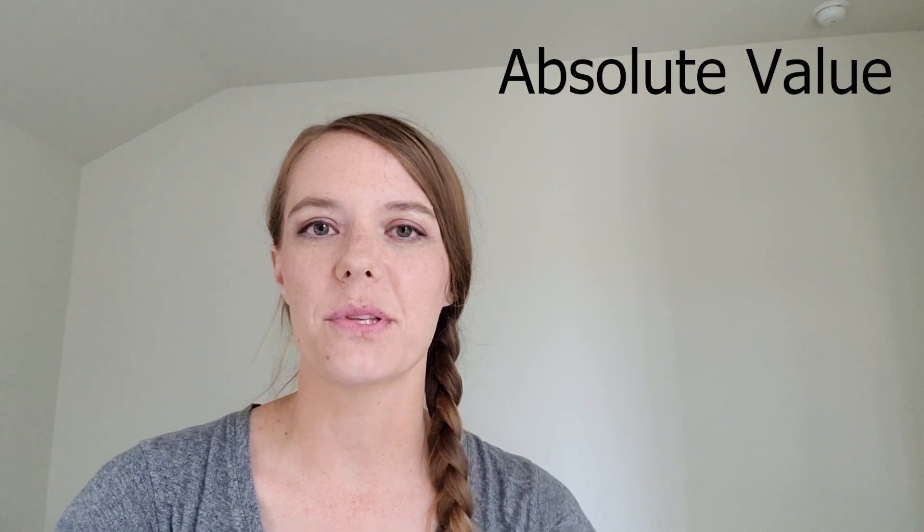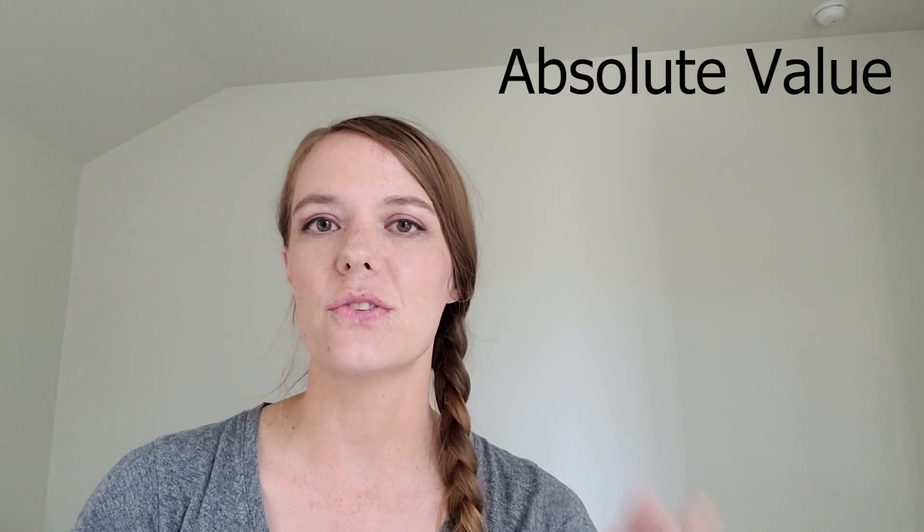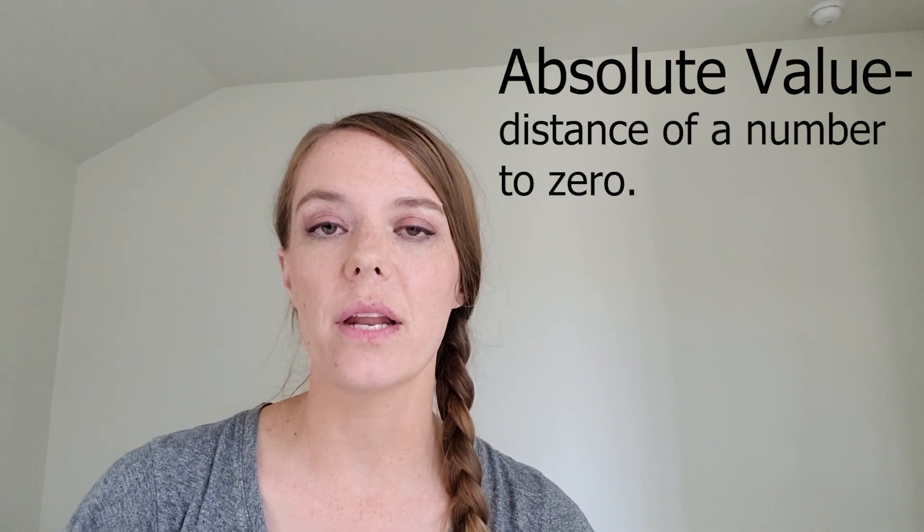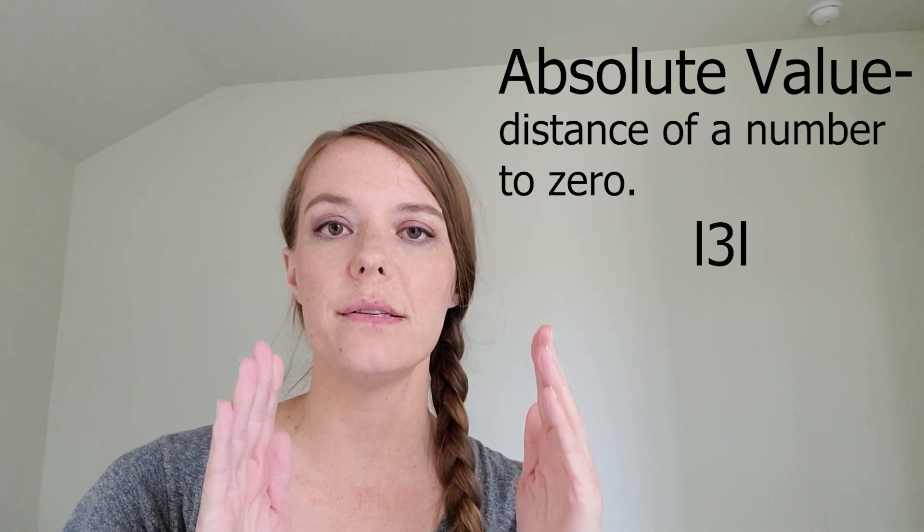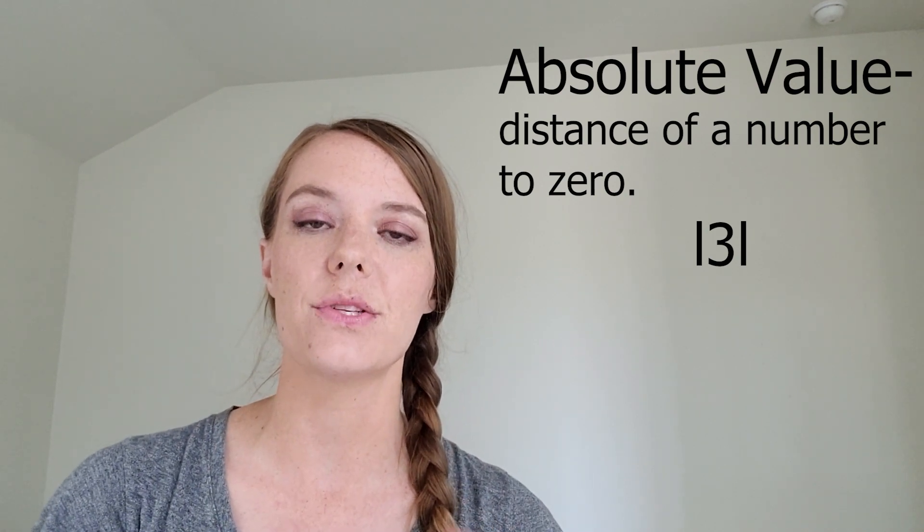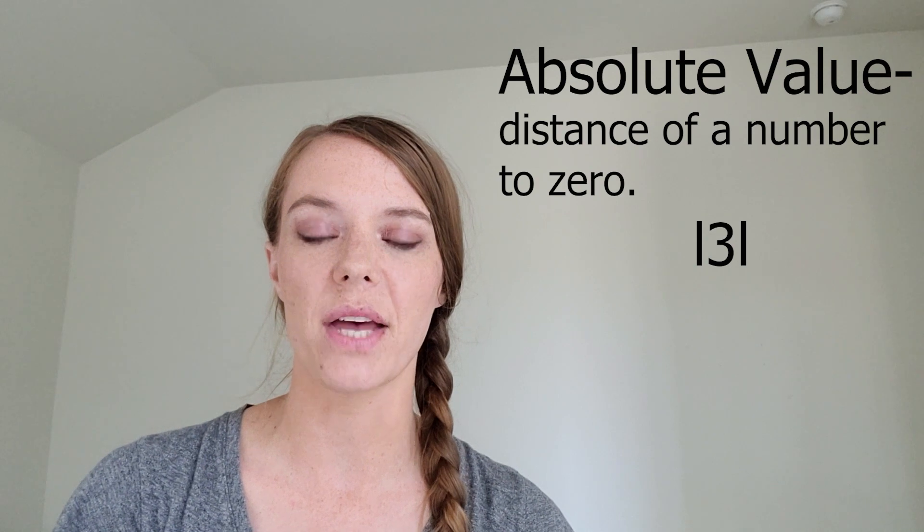The definition of absolute value is just the distance from a number to zero. And the symbols for it are just those vertical lines that you see over there that are on either side of the number. That means to find the absolute value of that number.